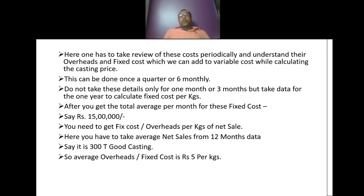This review can be done once in a quarter or every 6 months. Do not take data for just 1 month; take data for a whole year to calculate fixed costs per kg. After you get the total average per month for fixed costs, we need to calculate the fixed cost or overhead per kg of net sales — that is, fixed costs per kg of good casting with respect to net sales.